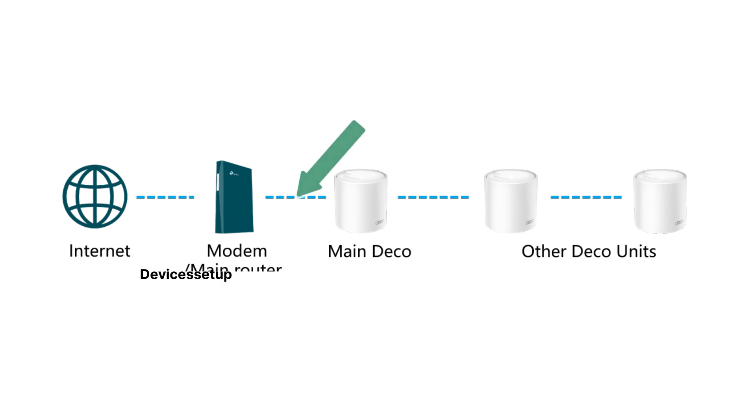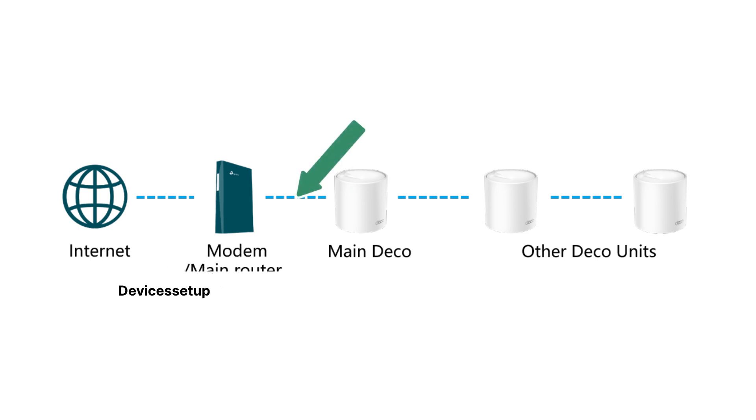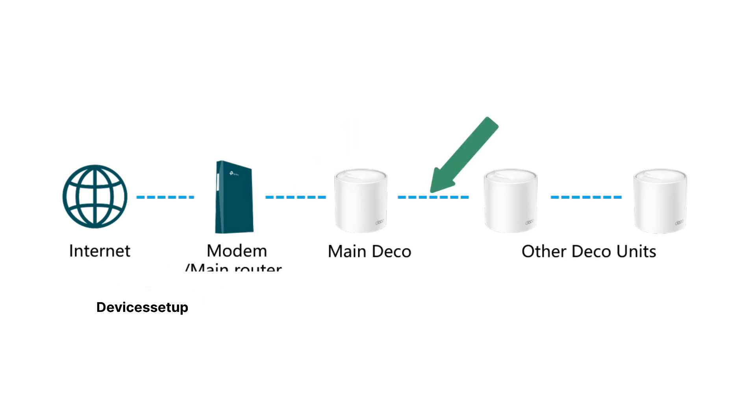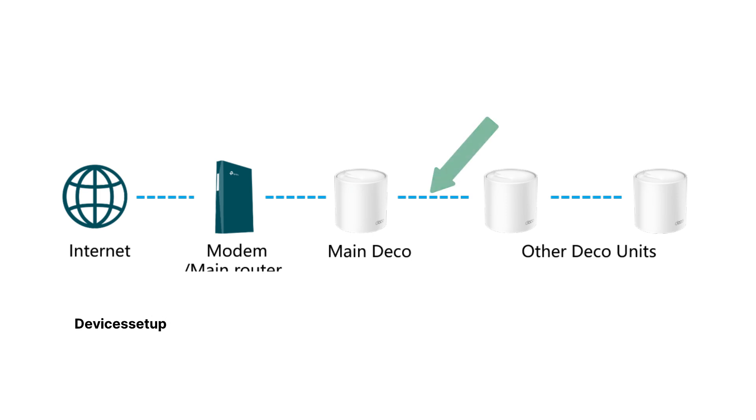Sixthly, try plugging the Ethernet cable coming from your modem to the primary Deco unit into any other Ethernet port on the Deco unit.